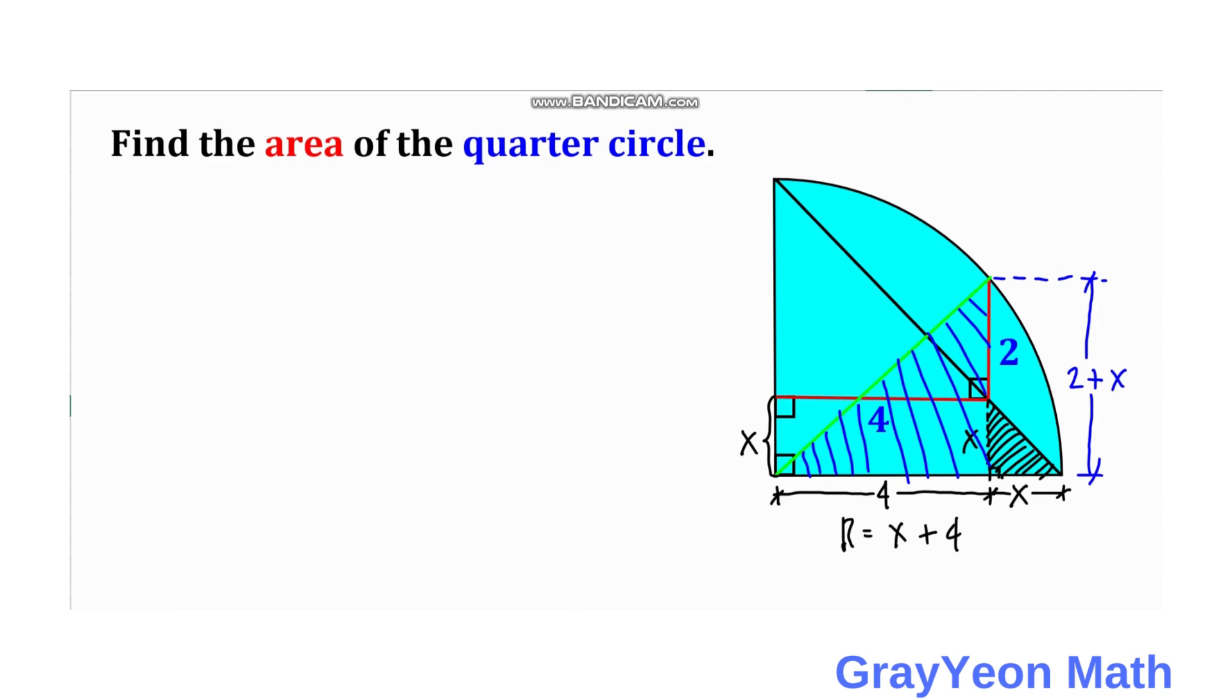And that right triangle, this is the other leg, the 4 units. And of course, the radius is actually x plus 4. So this length, this green length, is also x plus 4.